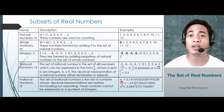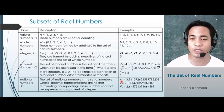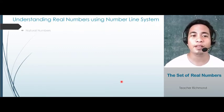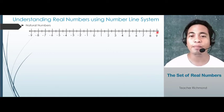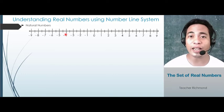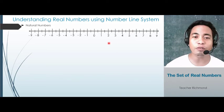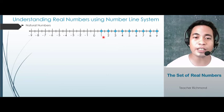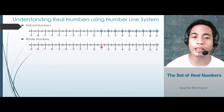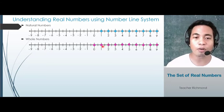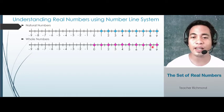To better understand the set of real numbers, we will plot them on a number line system. This line represents all real numbers. If you look at natural numbers, they start from 1, 2, 3, 4, 5, 6, 7, 8, 9, and so on. For whole numbers plotted on the number line, it starts with 0, 1, 2, 3, 4, 5, 6, 7, 8, 9, and so on. The arrow means it continues beyond.